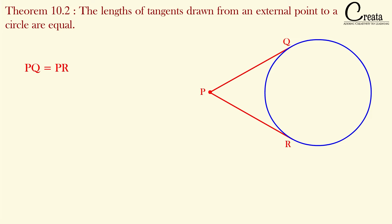The length of the tangent from any external point toward a circle are equal to each other. This is the property of the tangent and in this theorem we will prove the same. If you read the wording of the theorem — the lengths of tangents drawn from an external point to the circle are equal — P is the external point and PQ and PR are the lengths of the tangents. So this is the concept; let's prove the same.